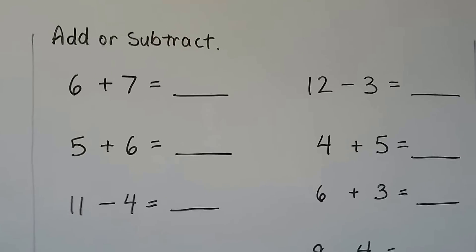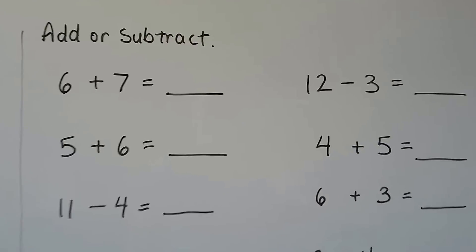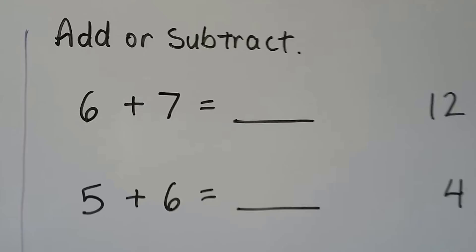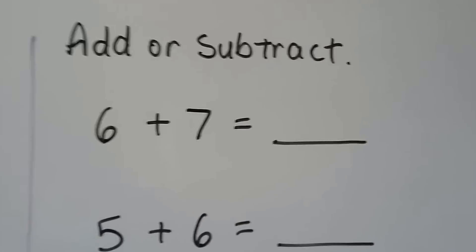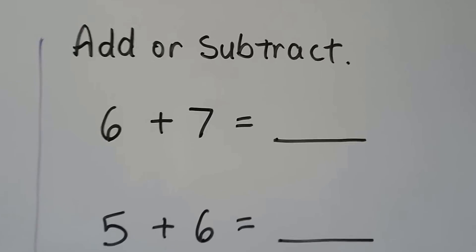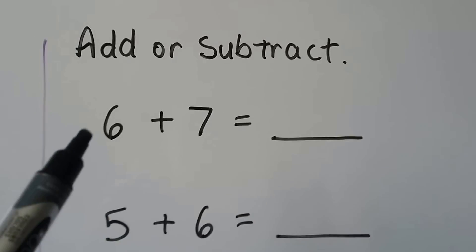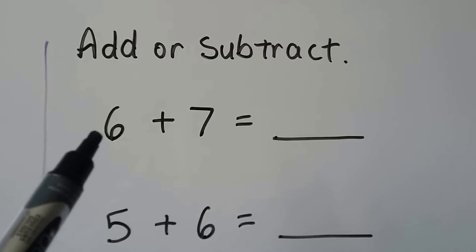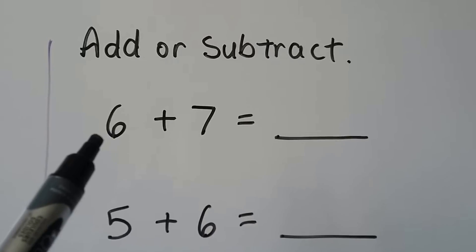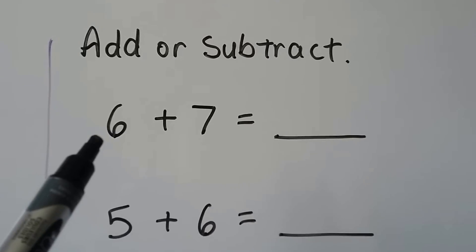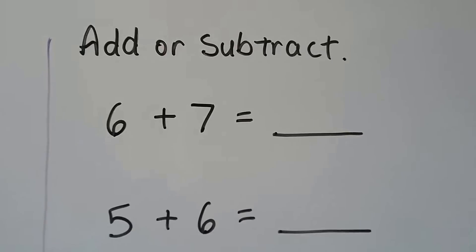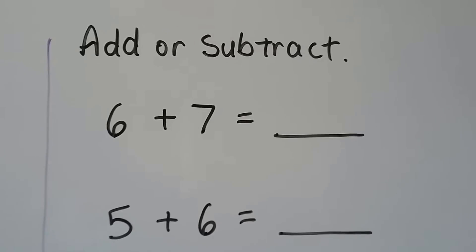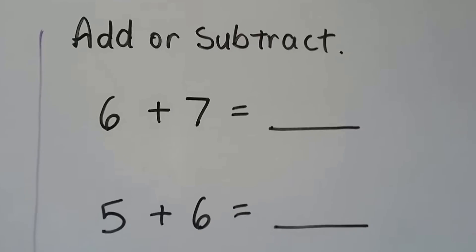Add or subtract. We've got 6 plus 7. We could use doubles plus 1. We can do 6 plus 6 — 6 plus 6 is 12 — and 1 more for the 7. That's 13.